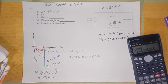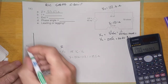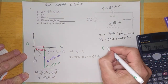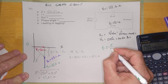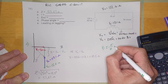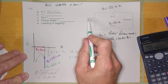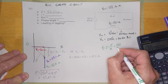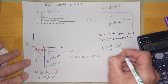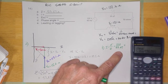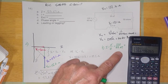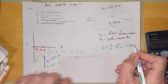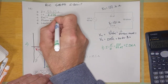Now the next thing I'm going to calculate is the current. So all this business was part A. Over here I'm going to calculate B. The current in this circuit will be E over Z — voltage divided by impedance. We're going to use the voltage of the whole circuit divided by the impedance of the whole circuit. 120 divided by 53.67 equals 2.236 amps.